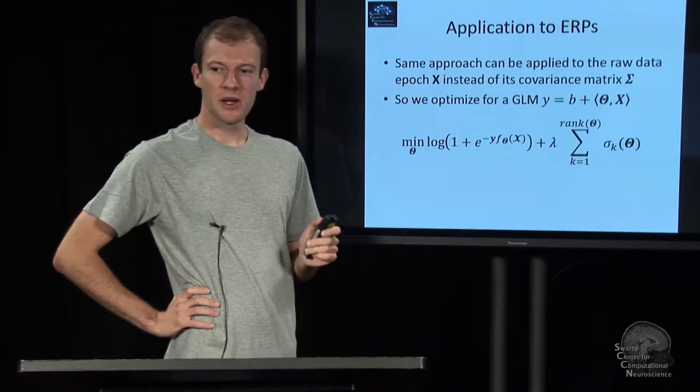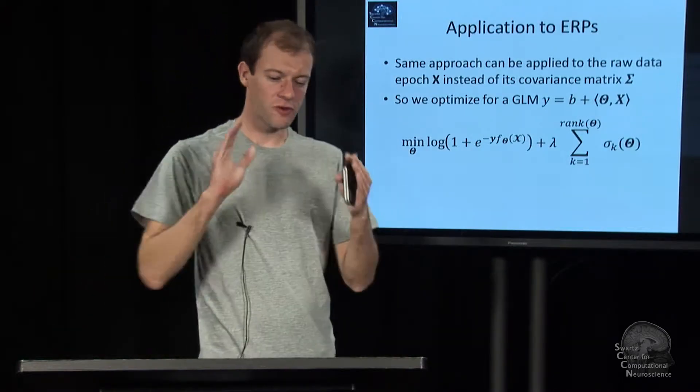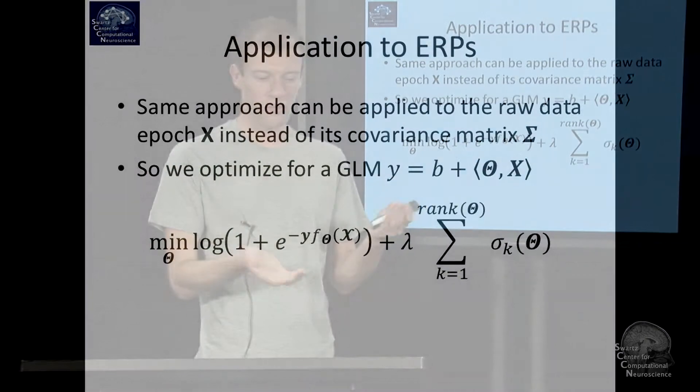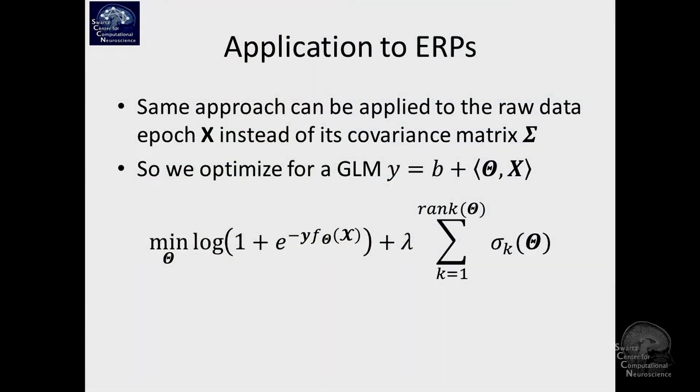The simple idea is we worked with a covariance matrix of one trial of data to capture variance for some oscillation. If we use, instead of that, the actual raw data X, the number of channels by number of time points matrix...